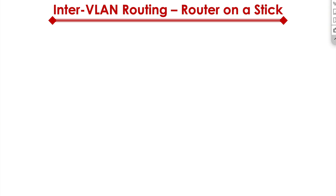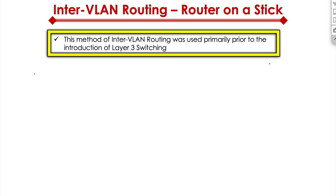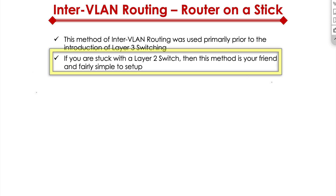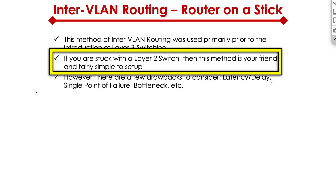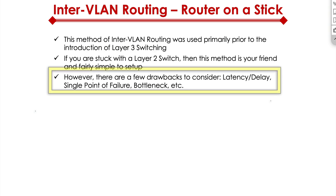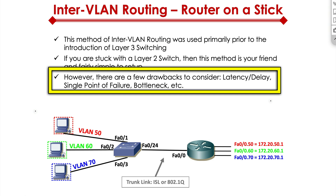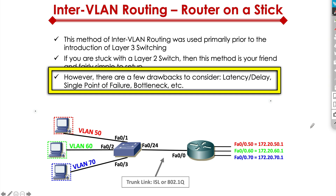Now let's quickly talk through the router-on-a-stick scenario. It's a legacy type of thing — if you're stuck with a Layer 2 switch, then this is the only way to do it. But there are a couple of drawbacks. Here we have a single point of failure; if this goes down, that's it. It also introduces latency and delay — if there's too much traffic going across it, packets will get delayed, buffering becomes challenging, and this becomes a bottleneck. So this is more of a legacy type concept, but it's still there, and in some networks you have to use it to get the job done.